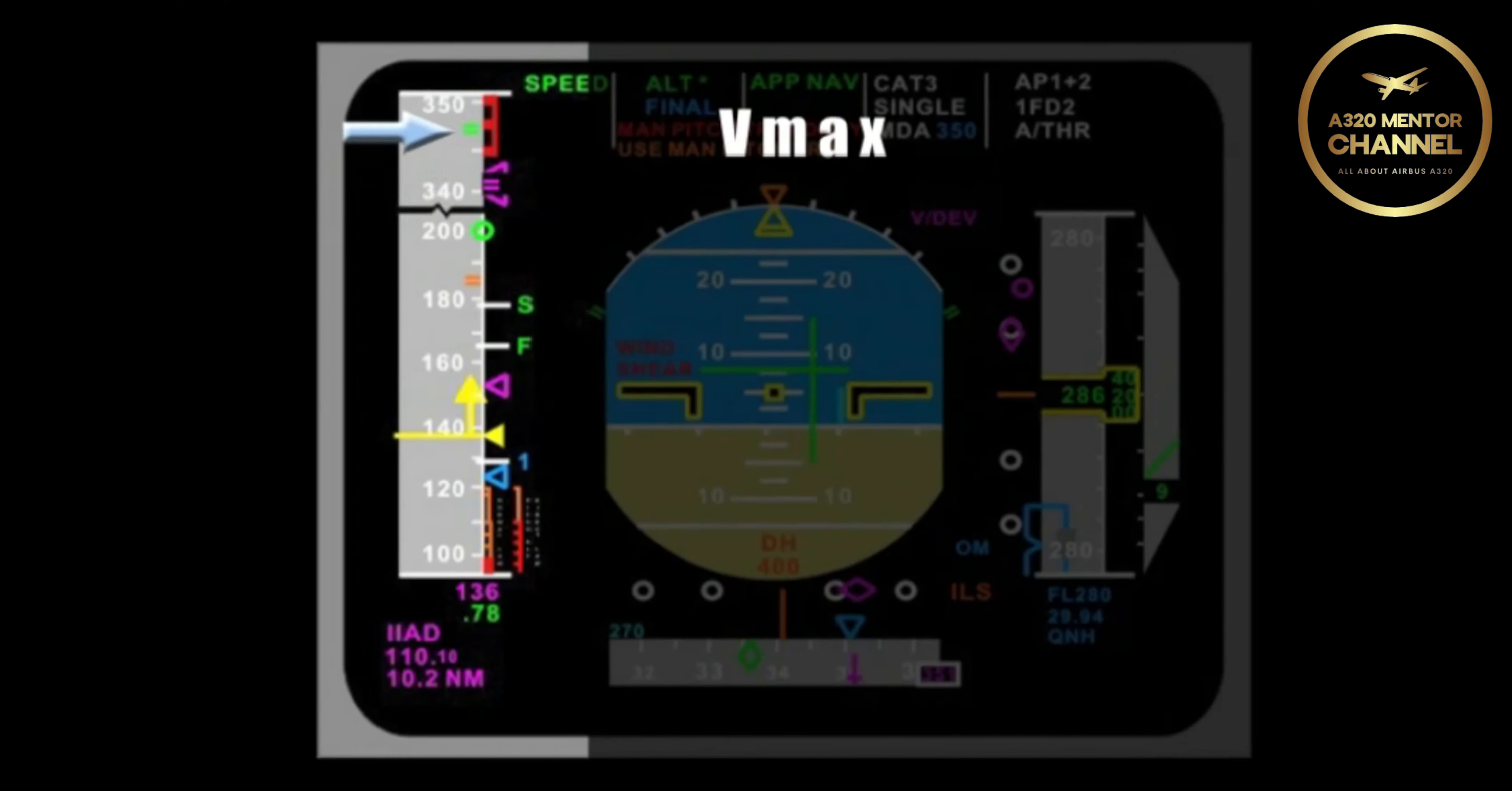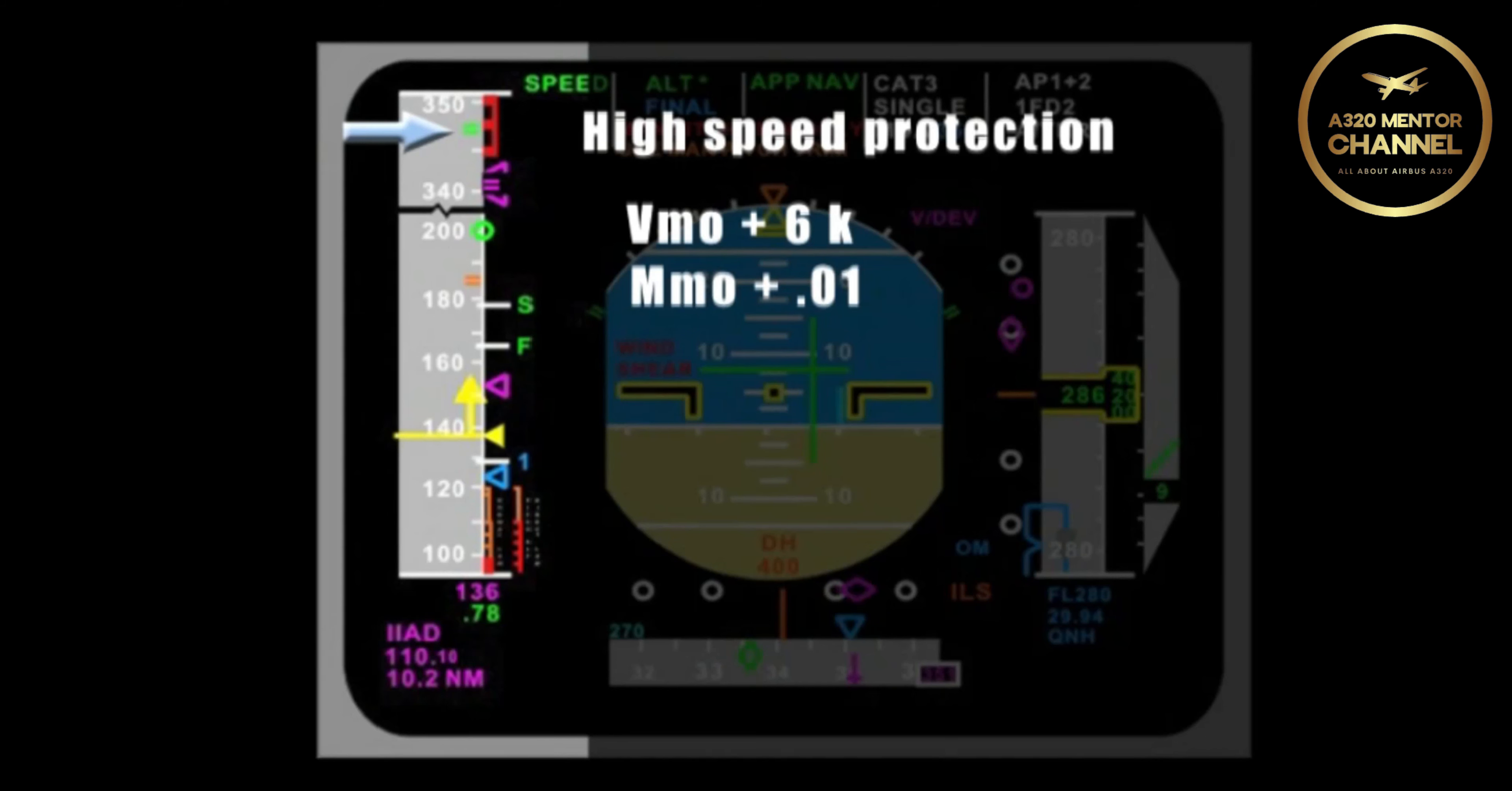If you accelerate past VMAX, on the left are double green tick marks. What is that called? That is high speed protection. If we reach that speed, what things occur?